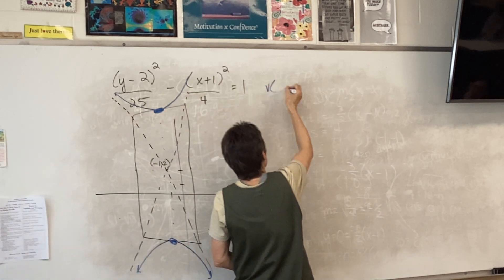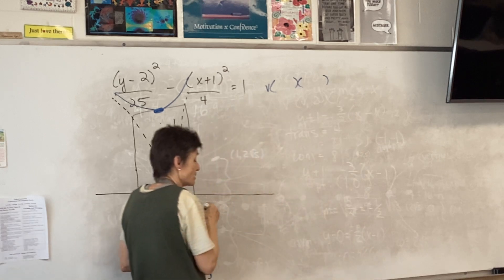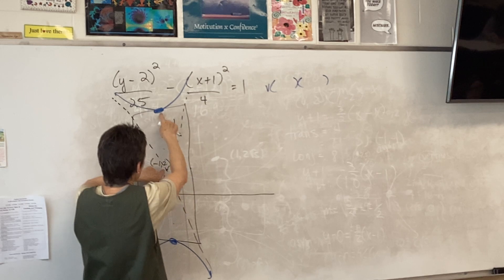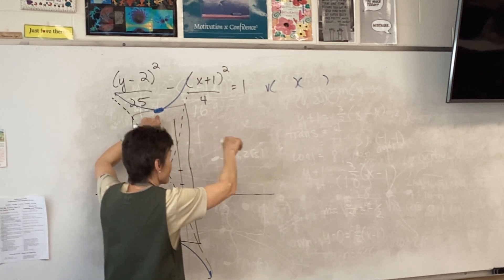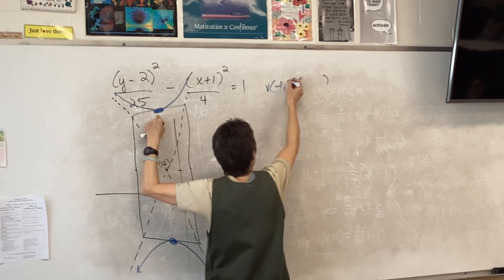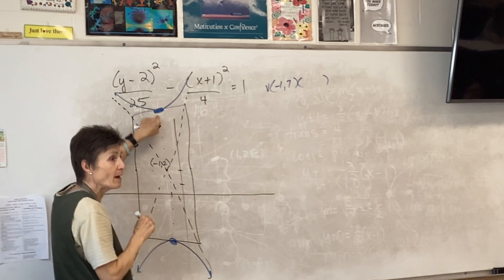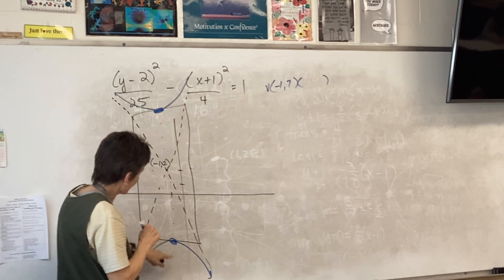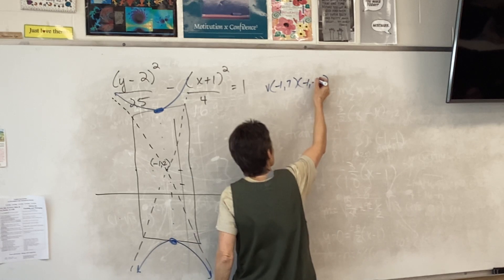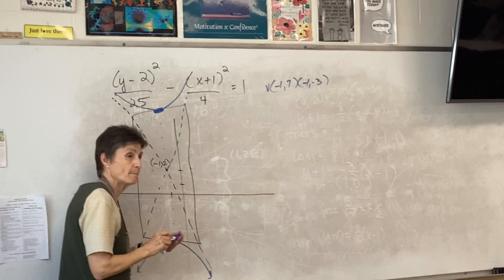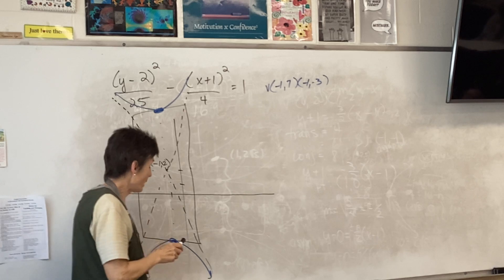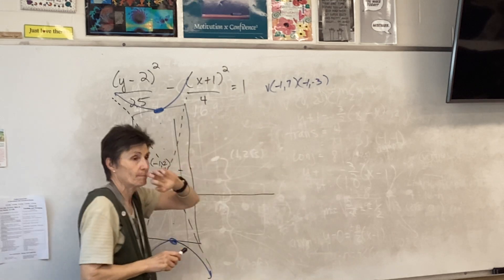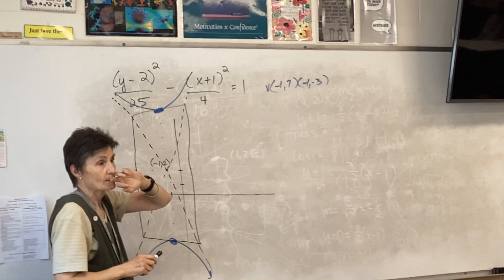I'm putting big blue points right where the curve touches the box — those are the vertices. What are the coordinates? You count up five from your center, so that should be negative one, seven. And the other vertex is negative one, negative three. Those are your vertices — there are only two of them.